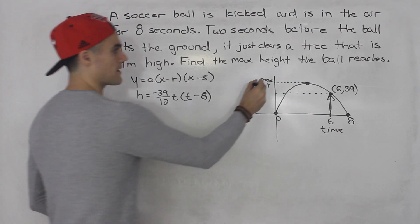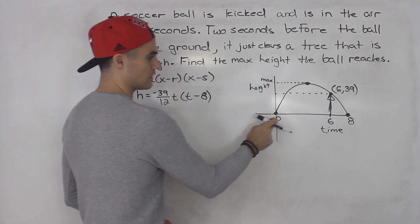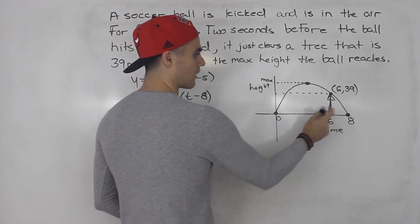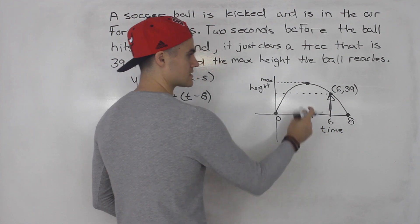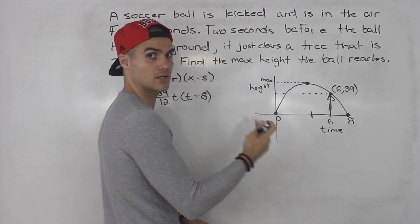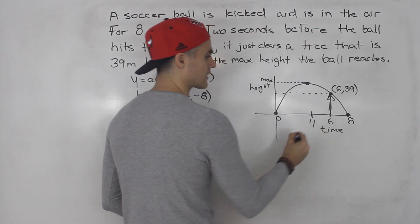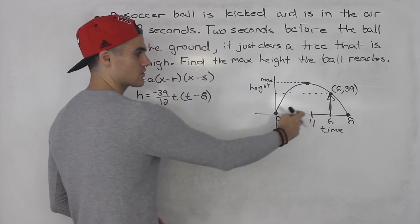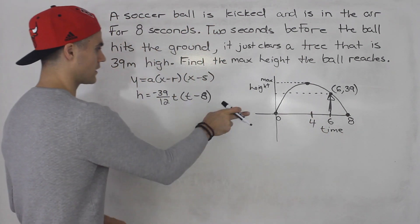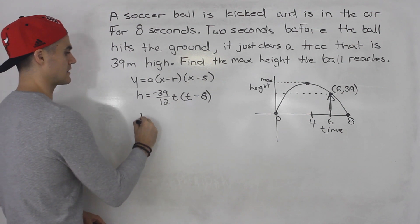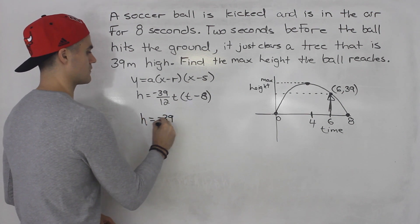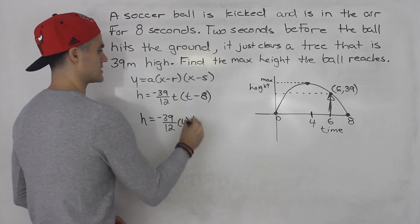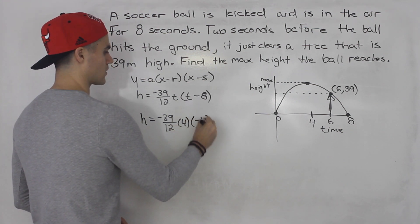And now how can we find this max height? Well, if the intercepts are zero and eight, at what time is it going to reach this max height here? It's going to reach it at four seconds, the halfway point between the intercepts. So we could just plug in four for t and get that max height. We have negative 39 over 12 times four times four minus eight, which is negative four.